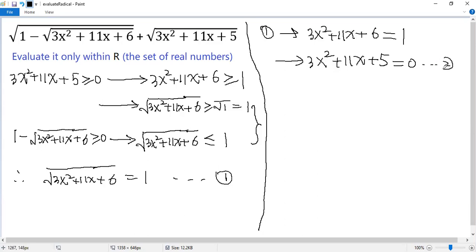We denote that as equation 2. So from equation 1, we know this part is 1 and this part is 0, so that should be √0. That means the given expression would be √(1-1) + √0. It is 0 + 0 = 0. That is the answer.